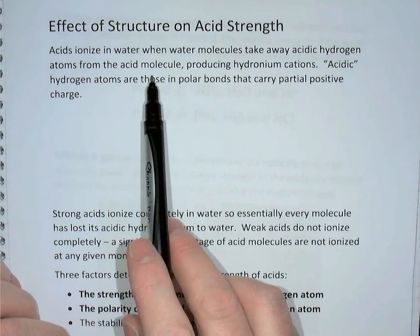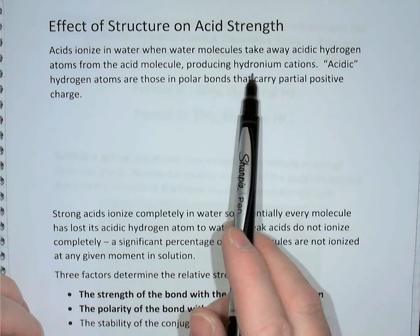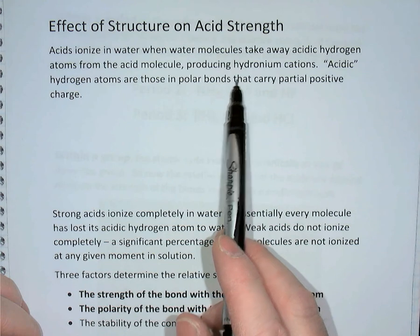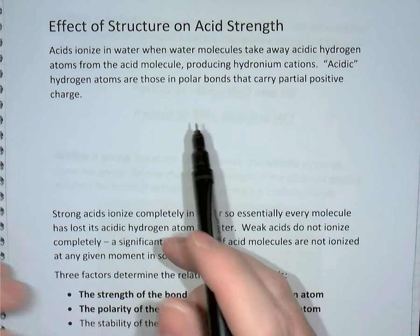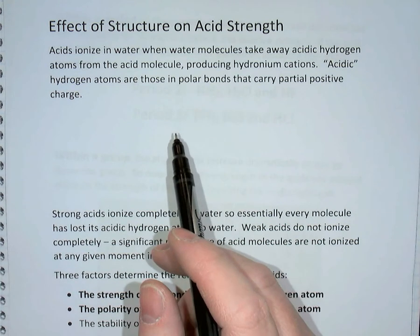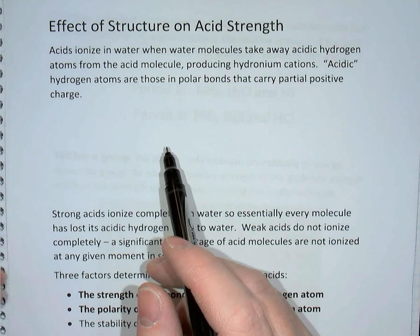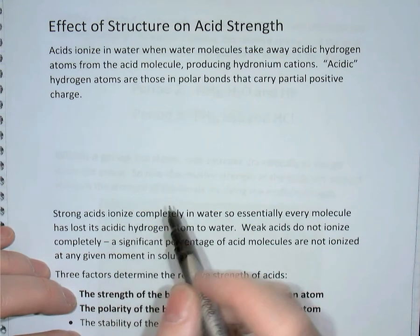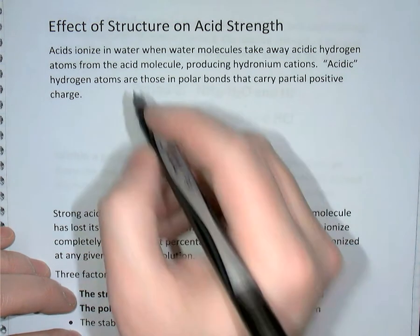The hydrogen ions bond with water, producing hydronium cations. The acidic hydrogen atoms are those that are involved in polar bonds within the acid, and they carry positive partial charges.